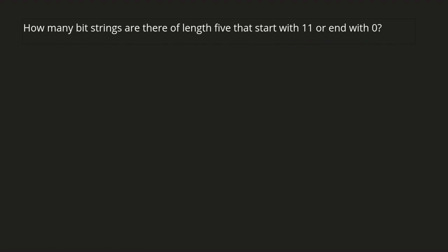Just to make sure everybody's clear on what we're talking about, a bit string is just a list that only has 1s or 0s. Some bit strings of length 5 would be 1,1,1,1,1 or 1,0,1,0,0 or 0,0,0,0,0, and so on and so forth. So that is a bit string, and these are all bit strings of length 5.